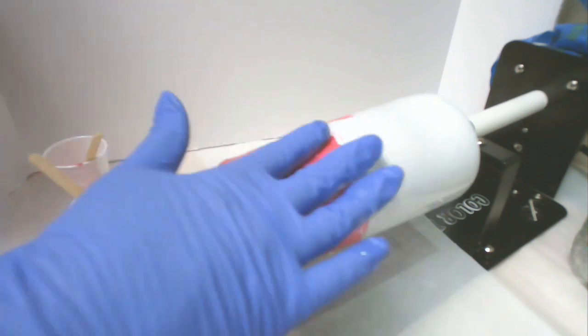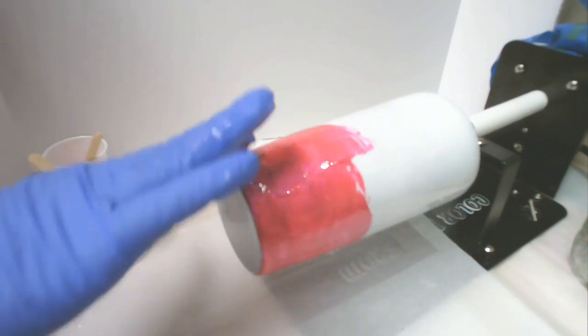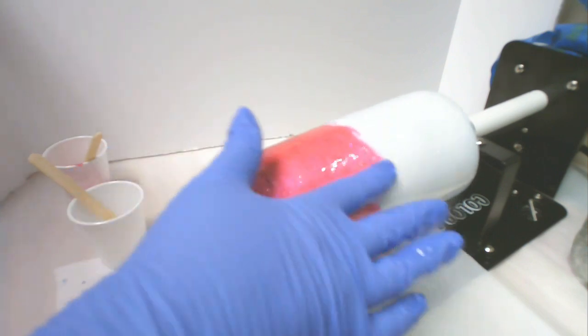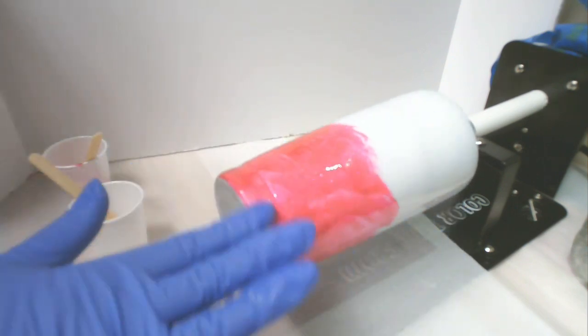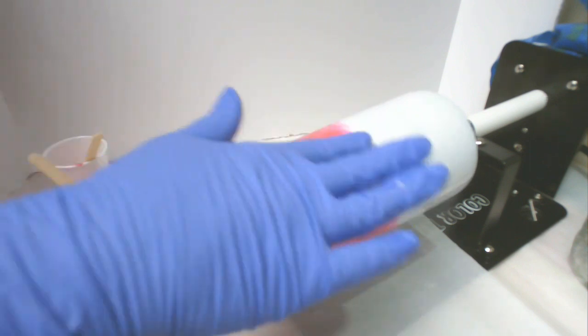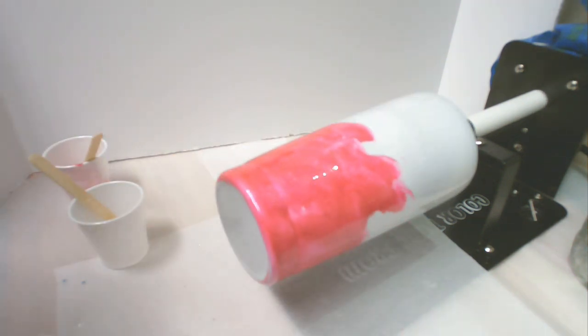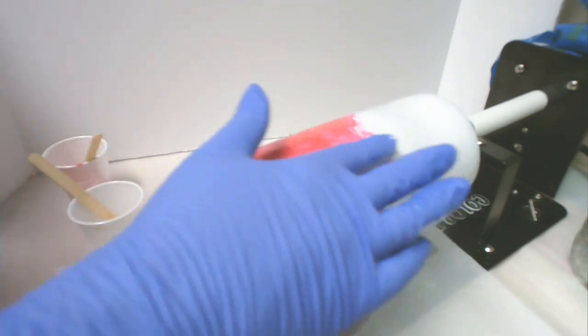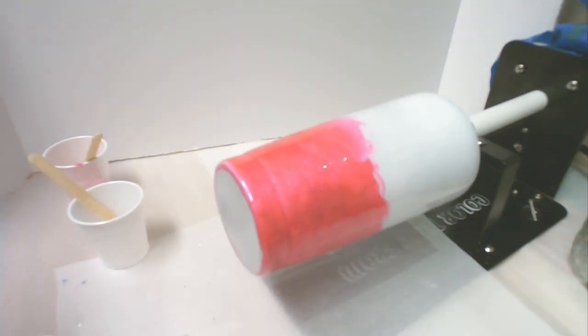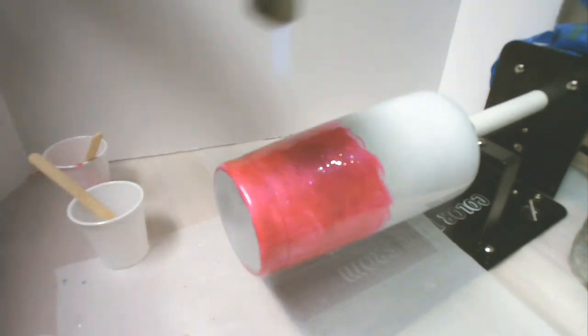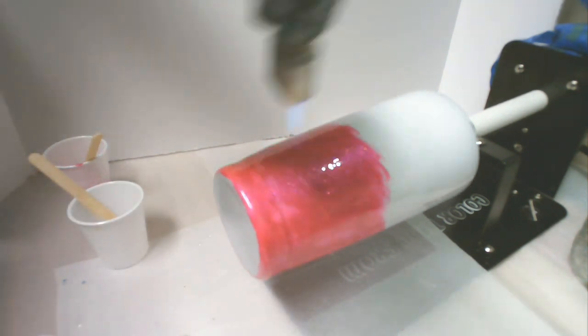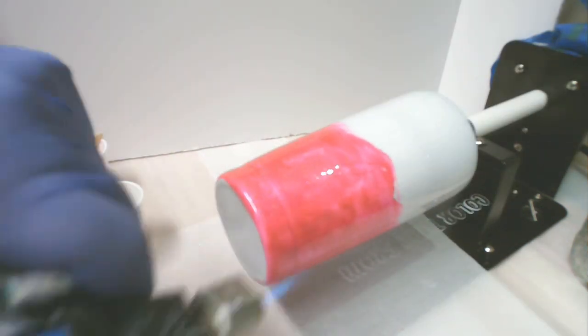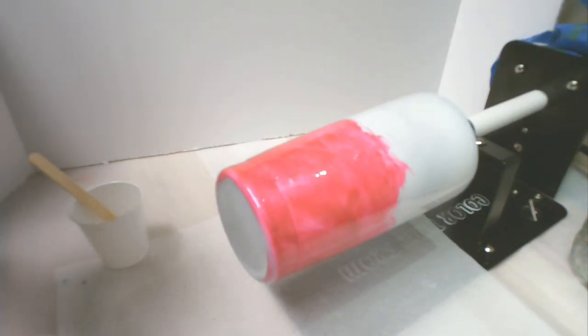And I know my hand's in the way and I'm really sorry. I'm working in a very cramped area right here. I actually have a cup on each side that's going as well. So I'm trying to do this and video it in a very small space. I just keep going around until I get it pretty much coated. And then I'm going to hit it again with the heat gun and let it start smoothing out.